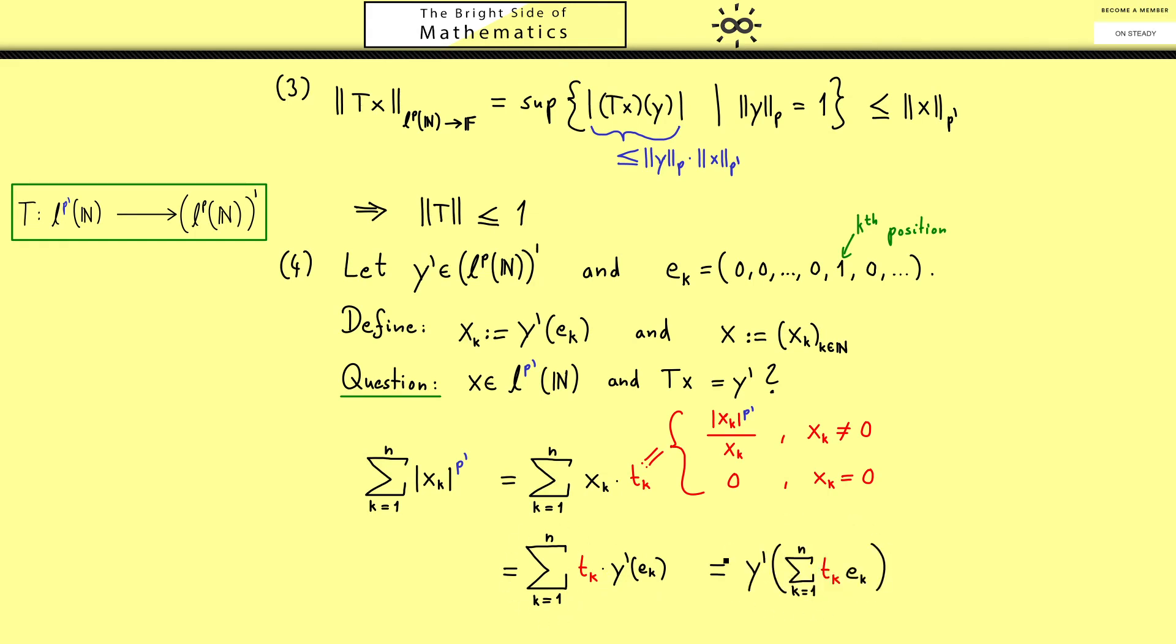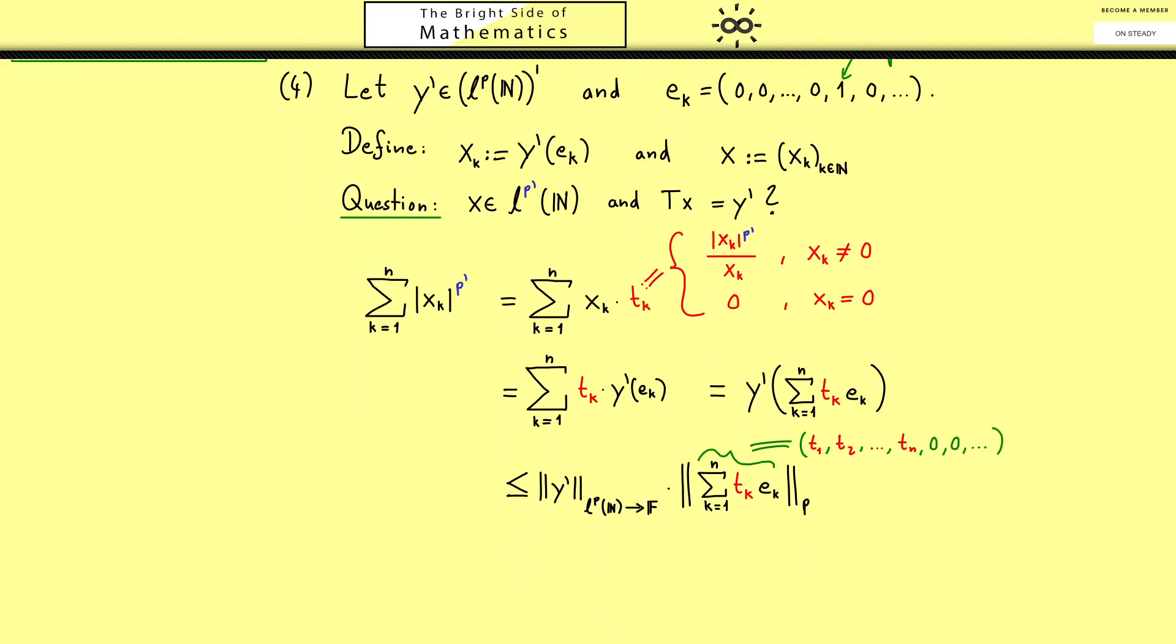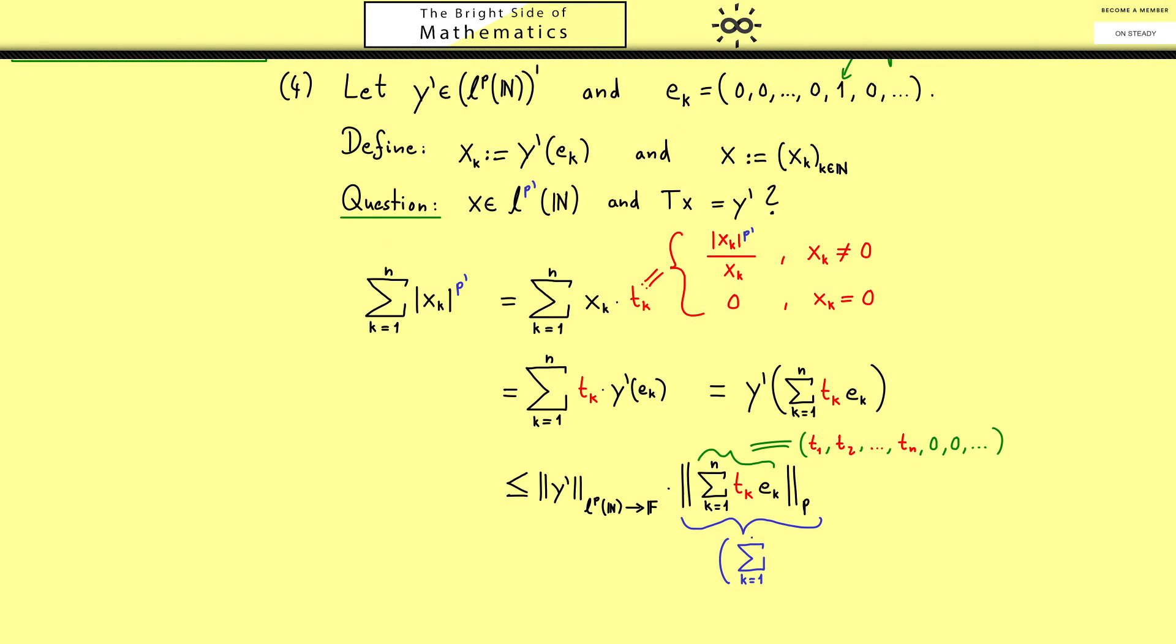Now by having this and knowing that everything here is positive we can use the common estimate we have with the operator norm of y prime. More concretely everything is less or equal than the operator norm of y prime times the norm of the vector inside. So we have the LP-norm here or just the p-norm of this sequence. However by the definition of the ek's we know this sequence is just t1, t2 until we reach tn. Therefore calculating the p-norm there is not so hard we can immediately write it down. It's just the sum from k equals 1 to n of tk to the power p, and then the p-th root as always.